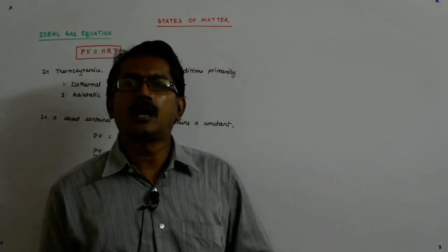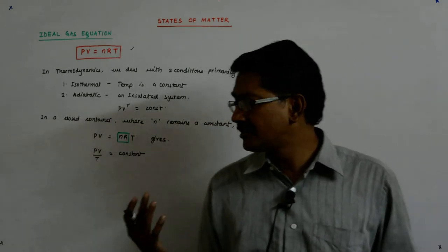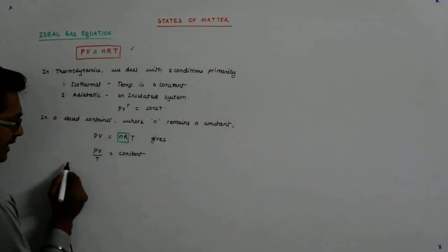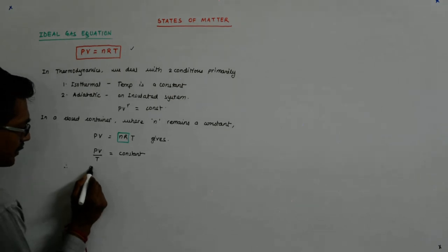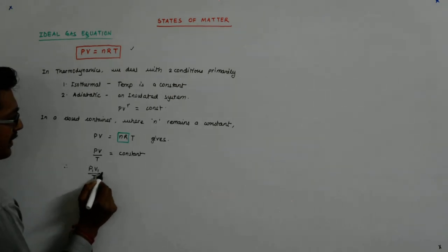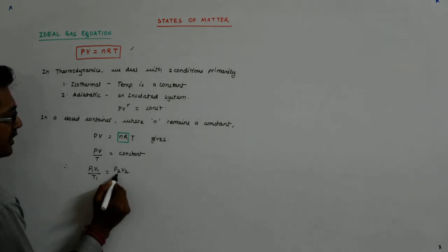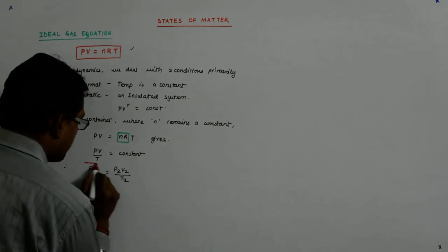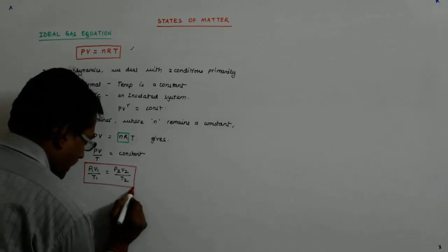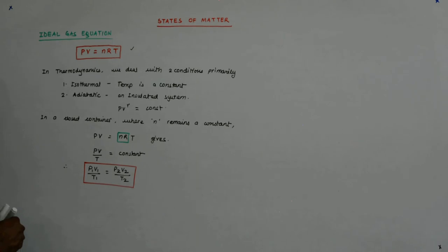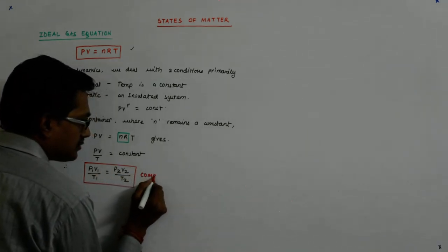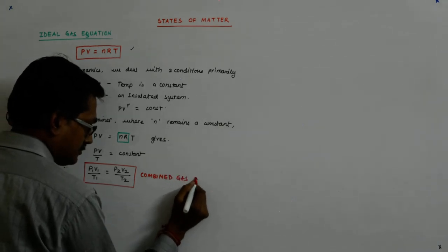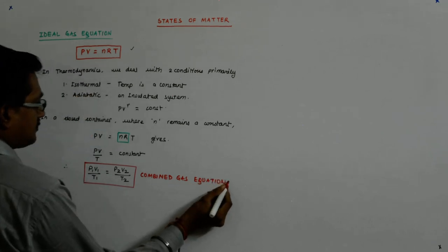Now, whenever that happens, it gives us PV upon T is equal to constant. And these three are those macro variables which you can measure. Therefore, P1V1 upon T1 is equal to P2V2 upon T2. This is called the combined gas equation.